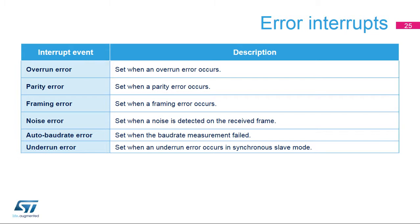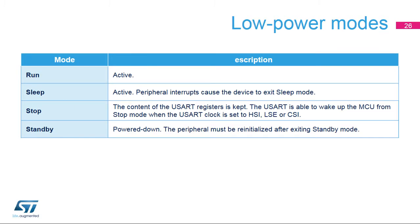The underrun error flag is set when an underrun error occurs in synchronous slave mode. The USART peripheral is active in run mode. USART interrupts cause the device to exit sleep mode. The USART is able to wake up the MCU from stop mode when the USART clock is set to HSI, LSE, or CSI. In standby mode, the peripheral is in power down and it must be reinitialized after exiting standby or shutdown mode.